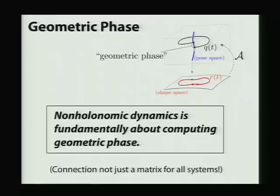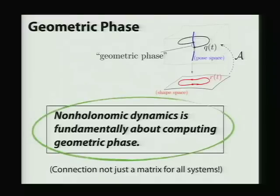And as I said, in our case, we're just using a linear matrix to encode the connection. So there's still an open question of how do we encode this geometric phase? How do we integrate this geometric phase for all the systems that we care about?